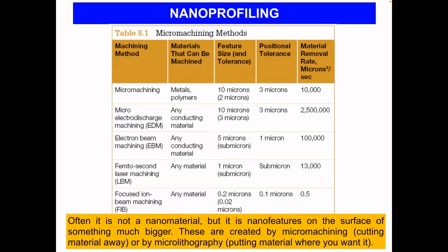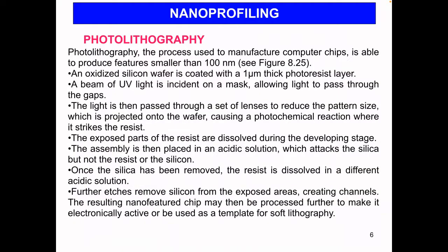The most famous micromachining methods include electron beam machining (EBM) and focused ion beam machining (FIB). These are some of the micromachining methods used for nano profiling. Nano lithography is the process used to manufacture computer chips and is able to produce features smaller than 100 nanometers. It's typically used to make printed circuit boards or integrated circuits.